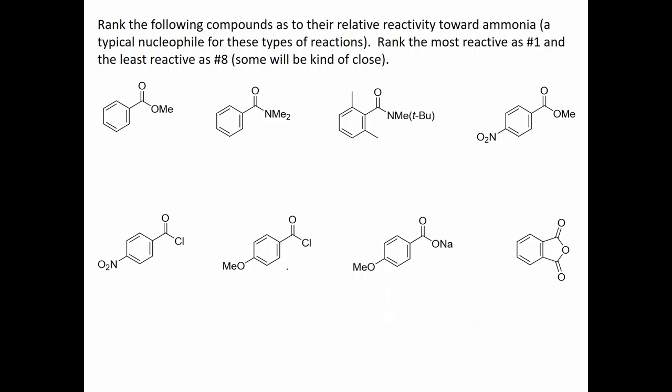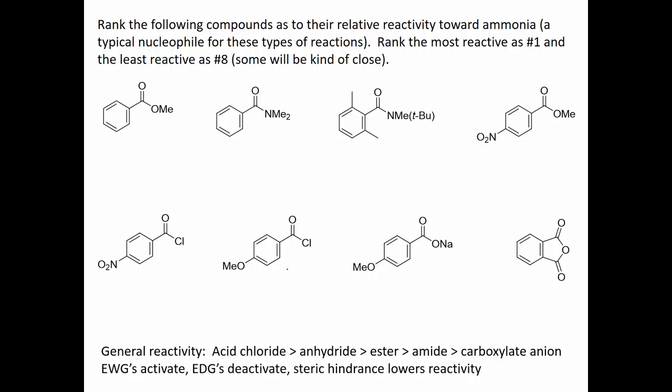Here's a classic type of question. Let's rank the following compounds as to their relative reactivity toward ammonia, a typical nucleophile for these types of reactions. We're going to rank the most reactive as number one, the least reactive as number eight. Primary considerations here are this general reactivity pattern. Acid chlorides are more reactive than anhydrides, more reactive than esters, more reactive than amides. Although we didn't cover it, common sense would tell you that something that's already an anion isn't going to be all that reactive to a nucleophile. We know that electron donating groups stabilize carbonyl groups. Therefore, they're going to make them less reactive. Whereas electron withdrawing groups make them less stable or more reactive. So we say electron withdrawing groups are going to activate. Electron donating groups are going to deactivate.